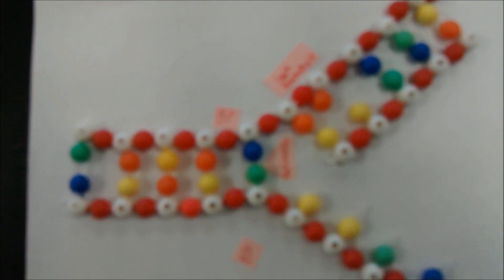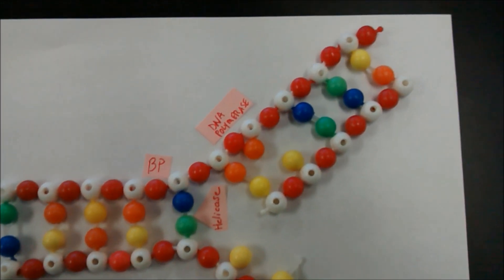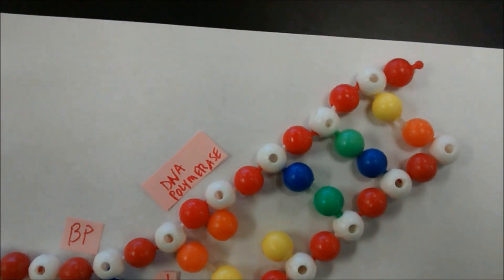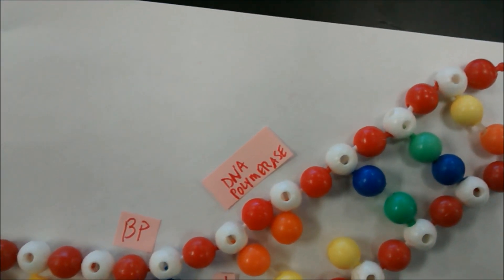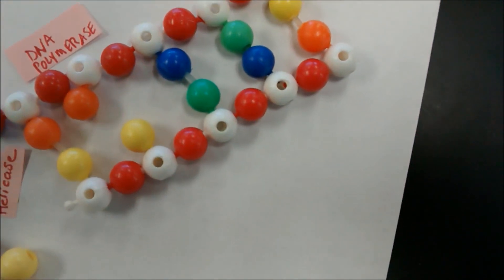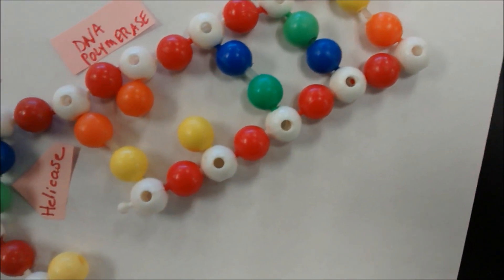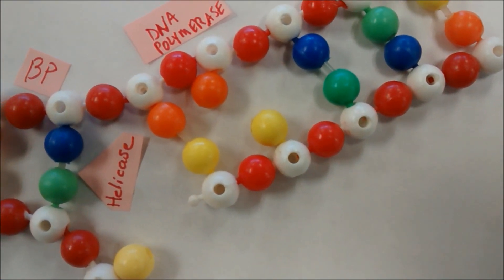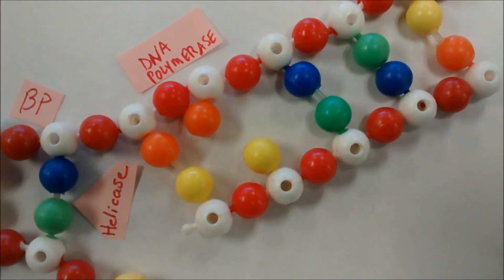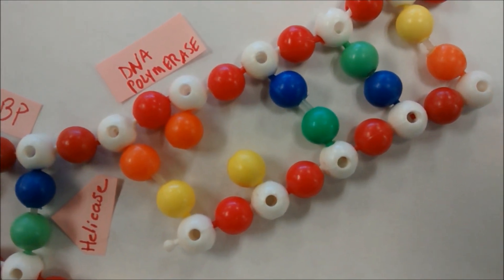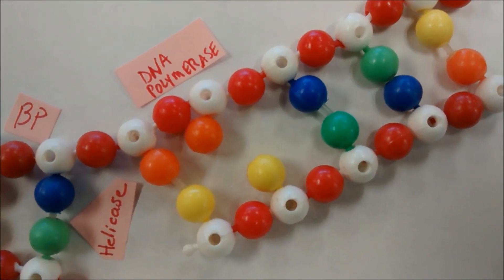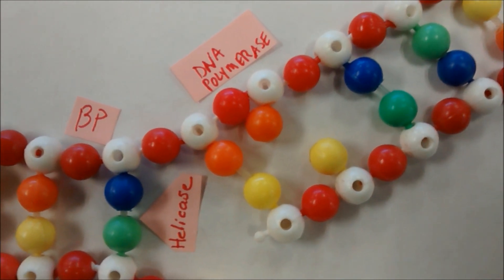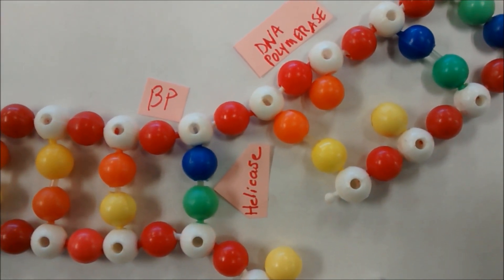So DNA polymerase slid down that three prime to five prime side, adding nucleotides one by one, pairing them properly, and it's just going to keep going in this direction, sliding down the three prime side, building the five prime to three prime side, and it's going to keep continuing.